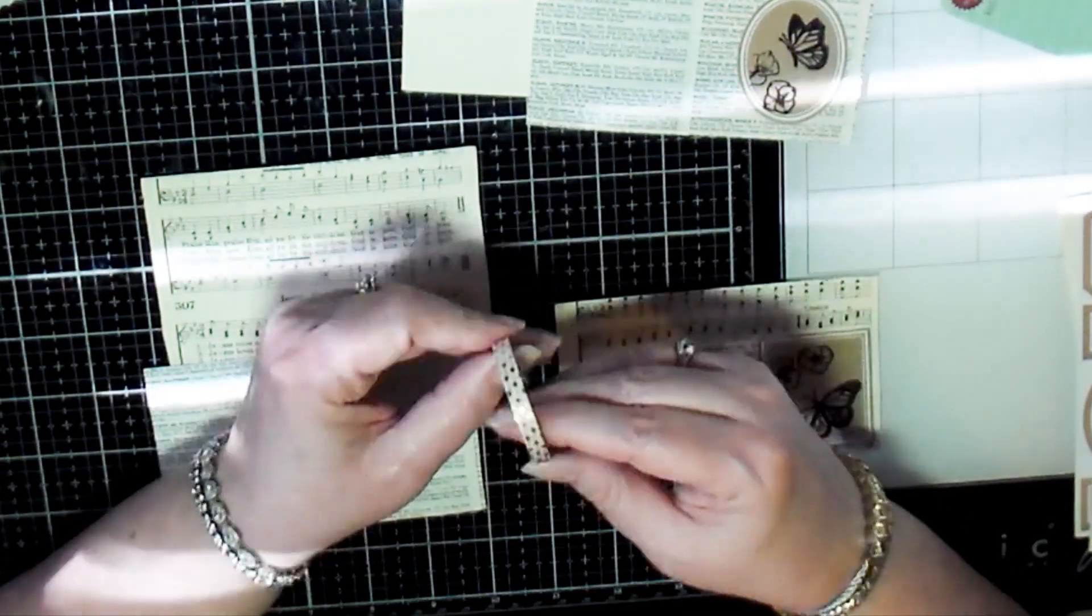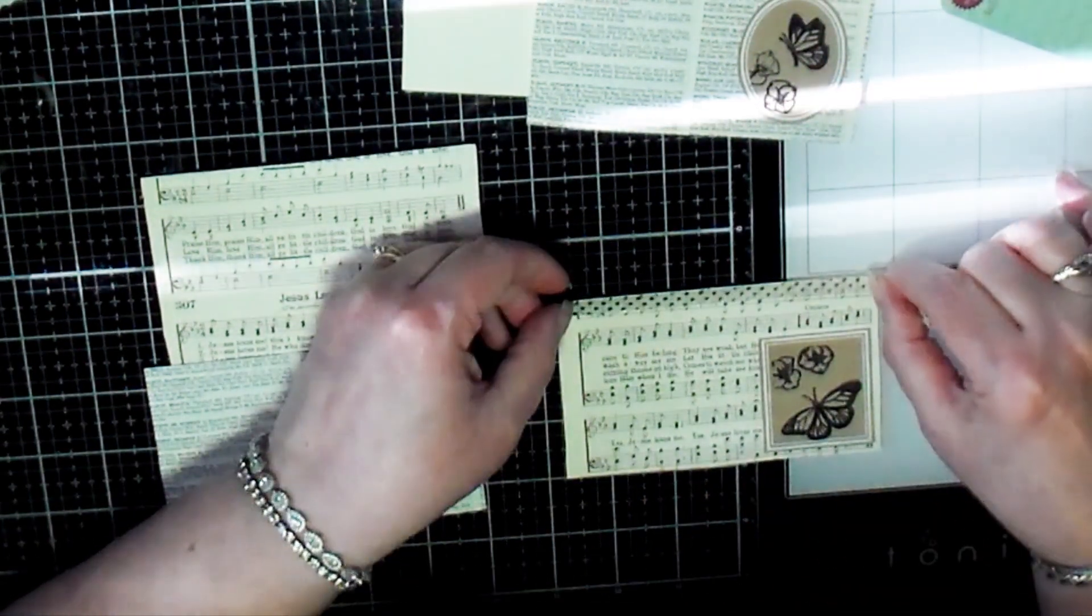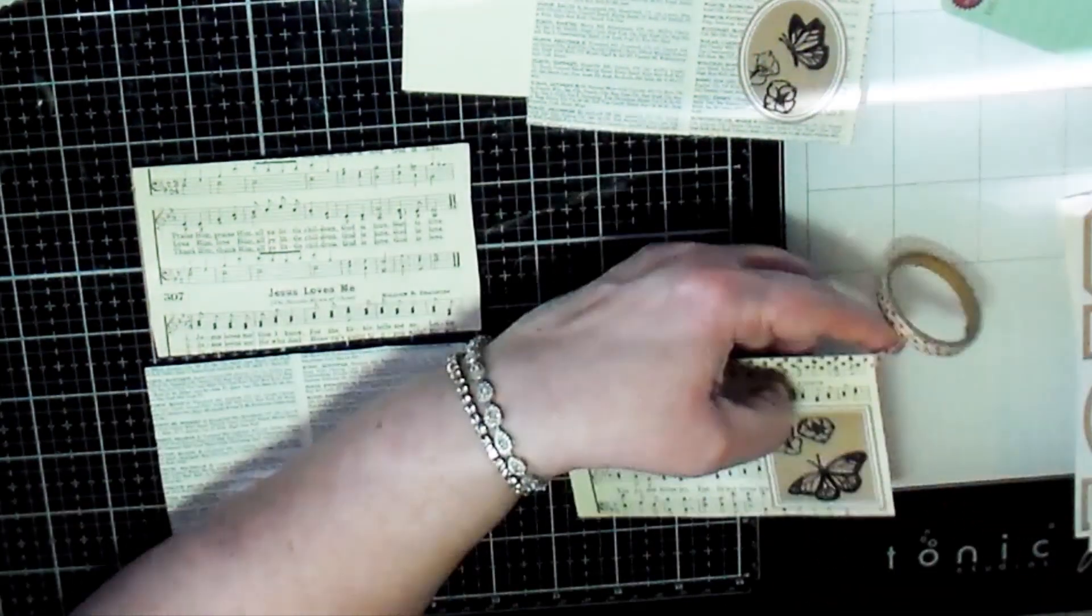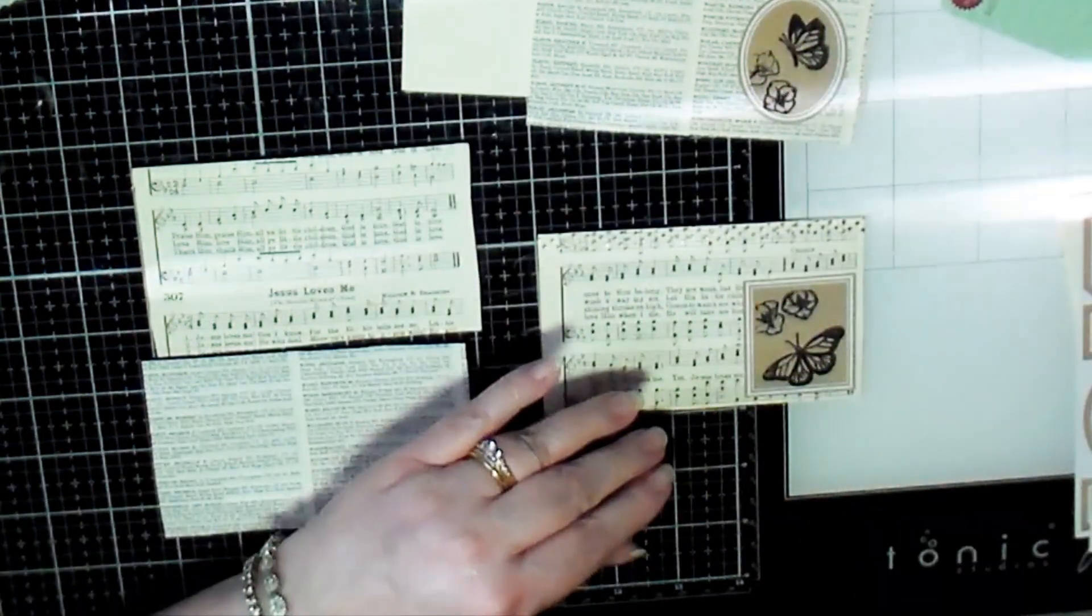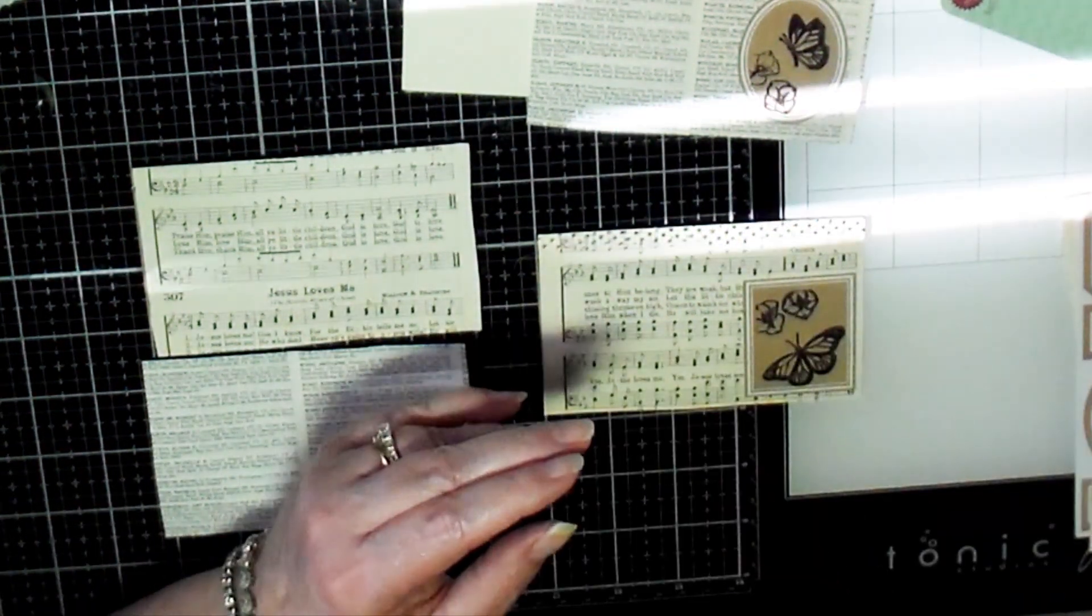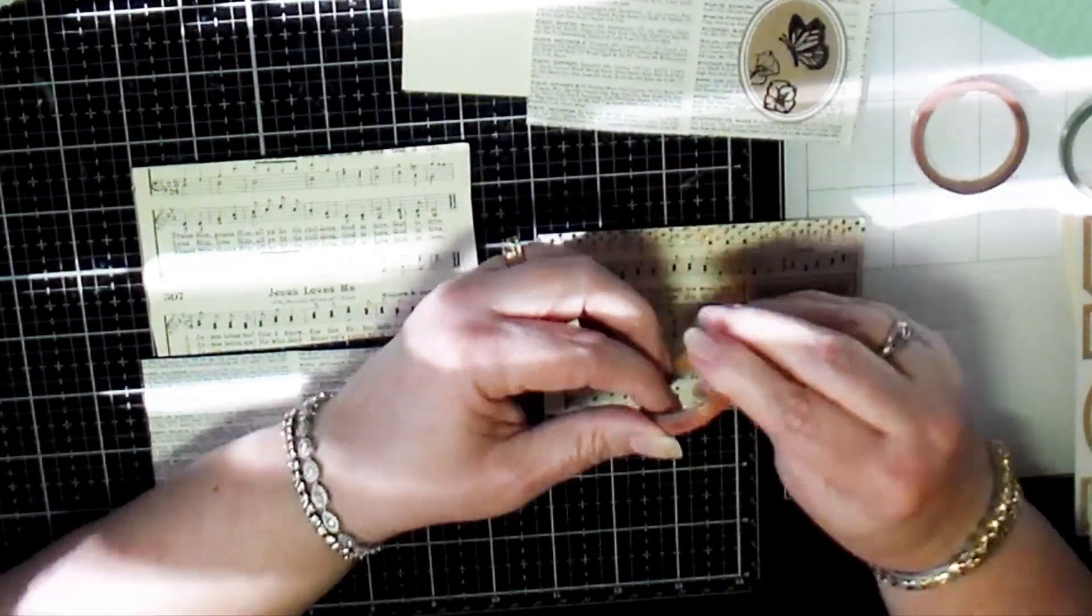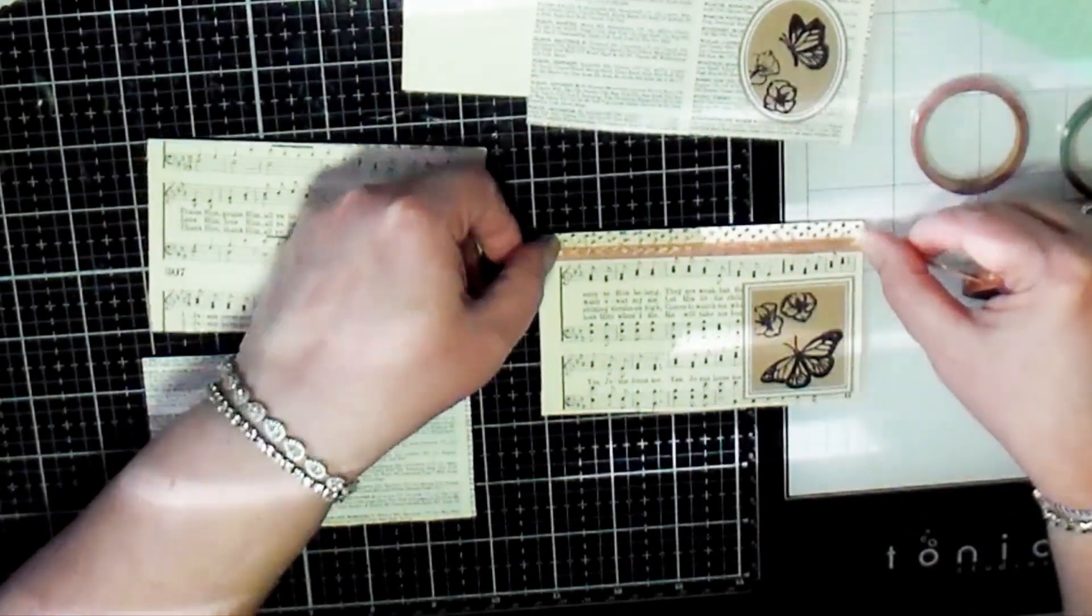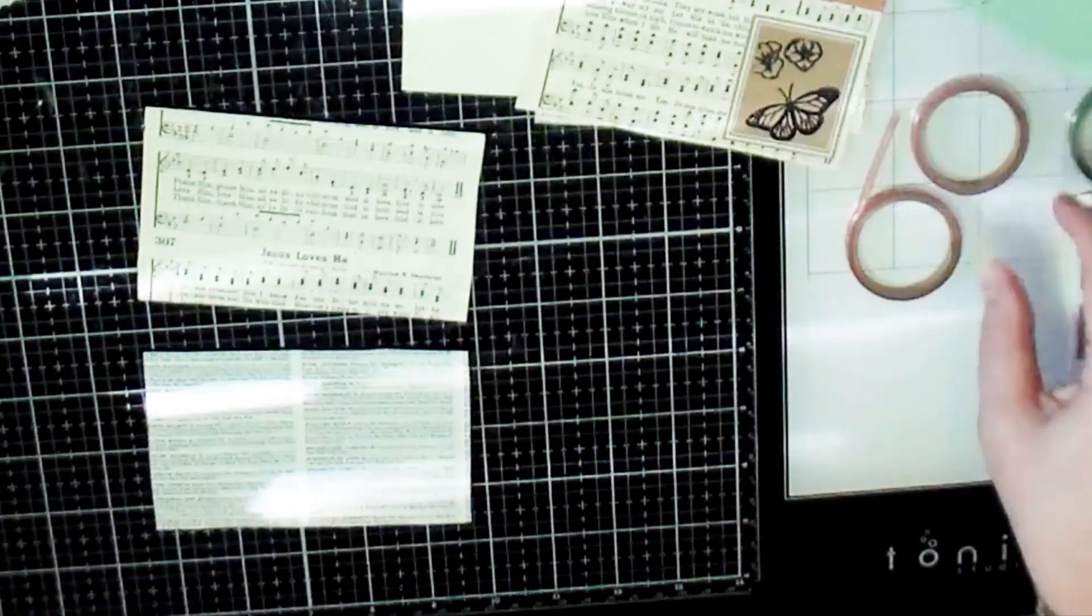And these skinny washi tapes, I just found them on Amazon some time ago. I've had them for a while now and I was wanting to get some skinny washi tape that I could use for various things and there's different colors and different patterns on them. So yeah, I really like them. They're kind of neat.